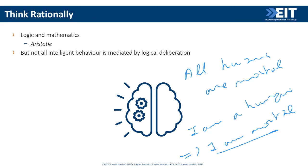...I am a human, therefore I am mortal. This is applying logic, and we believe any agent that can apply such logic is intelligent. But we should be careful: not all intelligent behavior is based on logical deliberation. Intuition, for instance — an expert medical doctor who looks at a patient and says 'I think I know what you have' — is using experience and intuition, not logical deliberation, and yet we consider them intelligent.